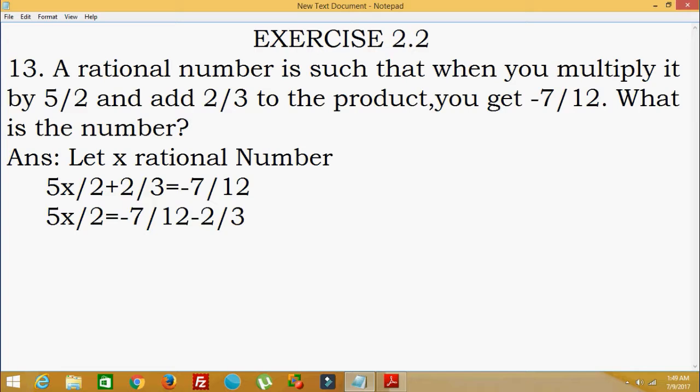So 5x/2 equals -7/12 minus 2/3. The LCM of 12 and 3 is 12, so we get -7 minus 8 in the numerator, divided by 12.